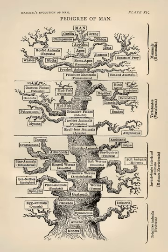Although genes contain all the information an organism uses to function, the environment plays an important role in determining the ultimate phenotypes an organism displays. The phrase "nature and nurture" refers to this complementary relationship. The phenotype of an organism depends on the interaction of genes and the environment. An interesting example is the coat coloration of the Siamese cat — in this case, the body temperature of the cat plays the role of the environment.